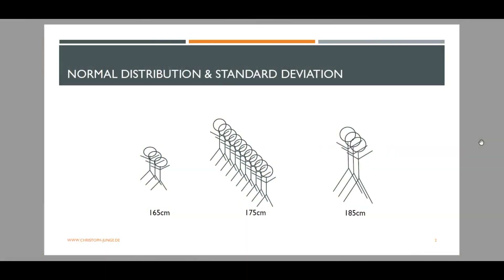Before we jump into the application of the concept of standard deviation in the financial markets, let's start with a real-world example. There are many data sets outside the financial markets that are normally distributed, or at least close to being normally distributed. This means the distribution looks like a bell curve. Examples could be IQ, or like in this example, height.